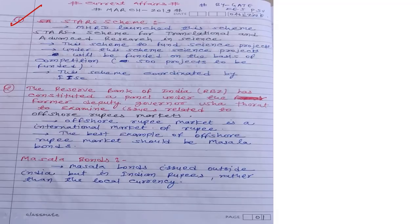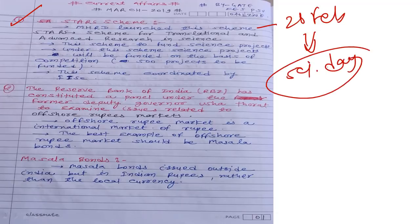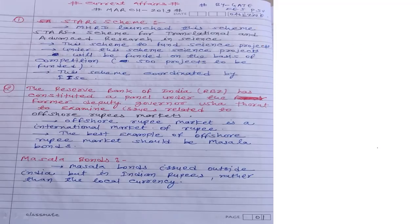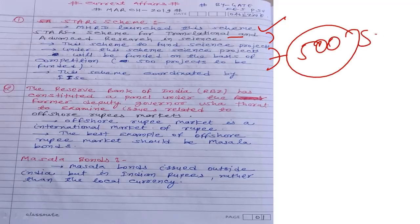The first current affair is the STARS scheme, launched on 28th February — also known as National Science Day. Science-related schemes are generally launched by MHRD, and this scheme is also launched by MHRD. STARS stands for Scheme for Translational and Advanced Research in Science.